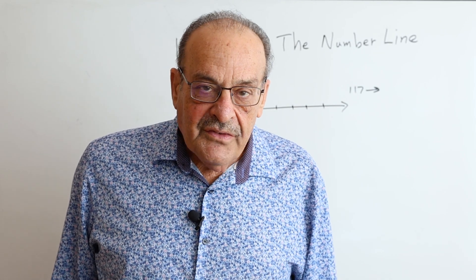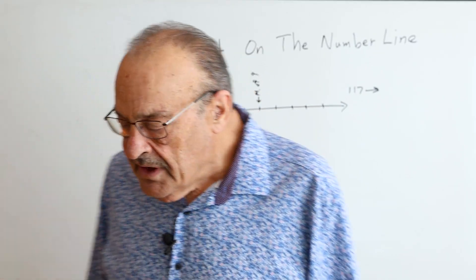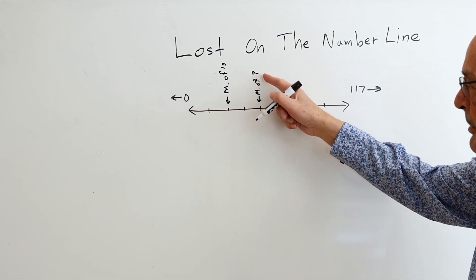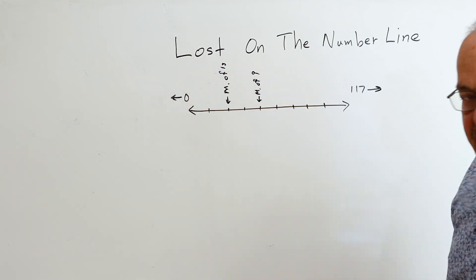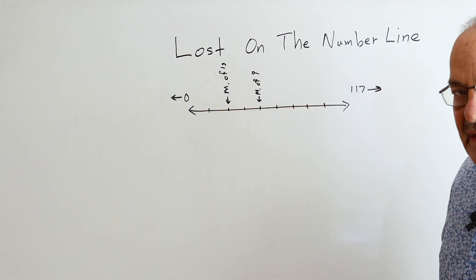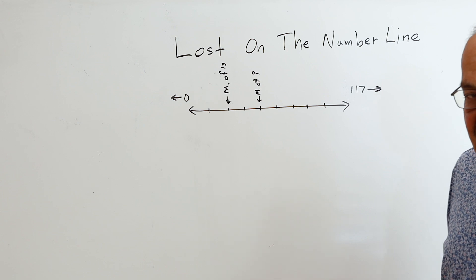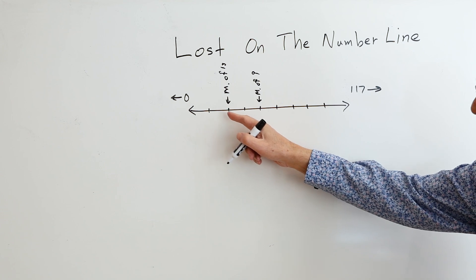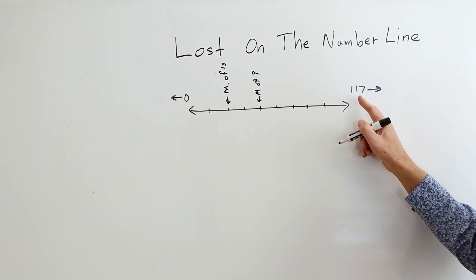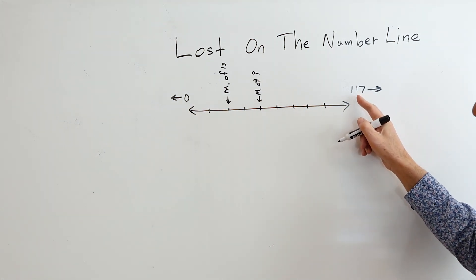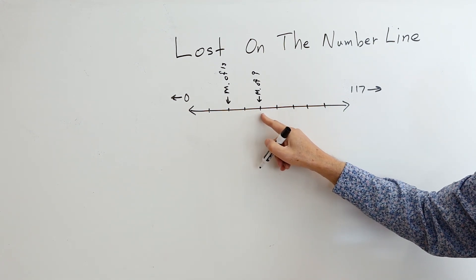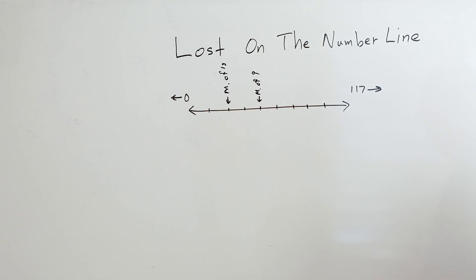Another 4 sheets that I have are called lost on the number line. Notice that I'm dealing with multiples of 9 and multiples of 13. 9 and 13 are relatively prime, which means they have no common factor other than 1. In that case, there's going to be only one spot on the number line between 0 and their product. There's only going to be one spot where this will be a multiple of 13 and this will be a multiple of 9.